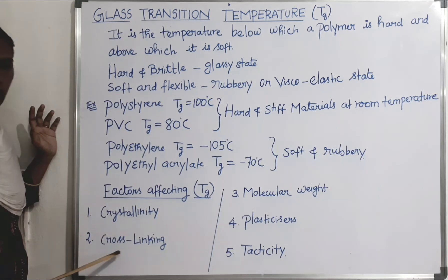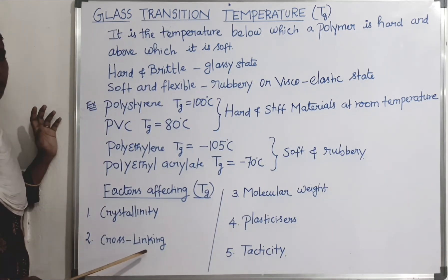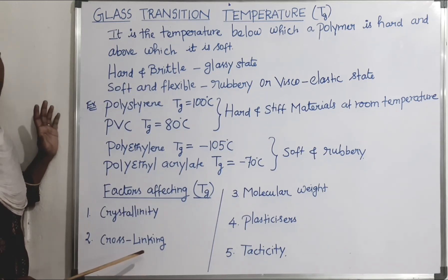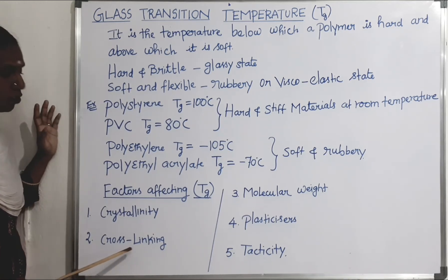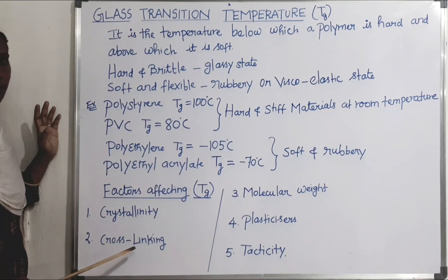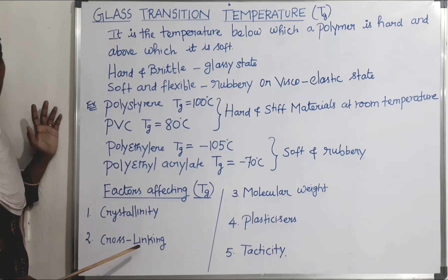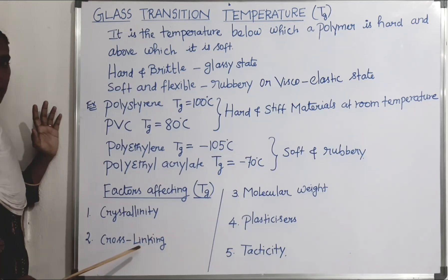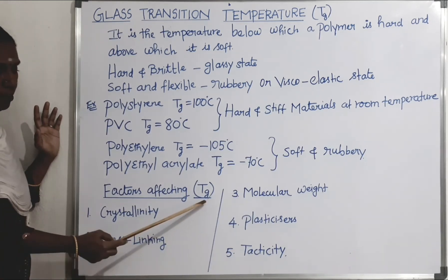The second factor is cross-linking. When polymer chains are cross-linked, they are arranged in a cross-linked fashion. Because of this cross-linking, it restricts the rotation and movement of the chains, so the Tg value also increases.